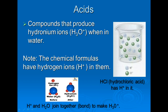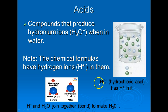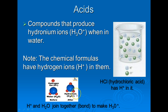Acids are compounds that produce hydronium ions, or H₃O⁺, when in water. For example, hydrochloric acid has an H⁺ at the beginning — that tells us it's an acid. When you put it into water, the hydrogen attaches to the water and makes a hydronium ion. The hydrochloric acid used in class was hydrochloric acid put in water, so there were hydronium molecules in there.